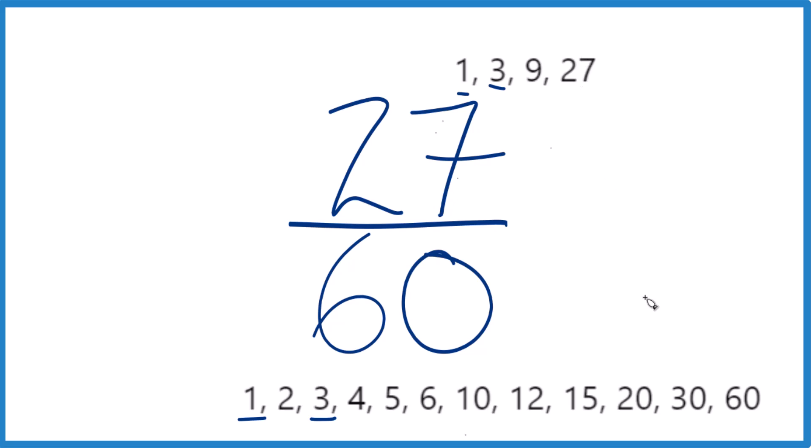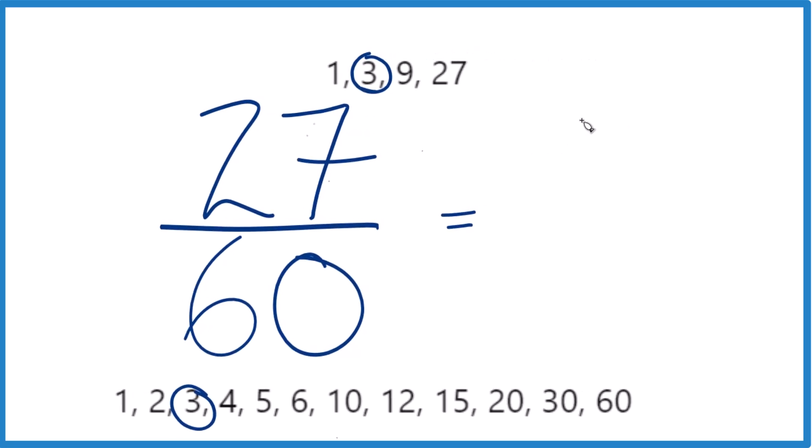9, nope. 27, no. So 3, that's the only factor that's common for 27 and 60. So we divide 27 by 3, and 27 divided by 3 is 9, because 9 times 3, that's 27.